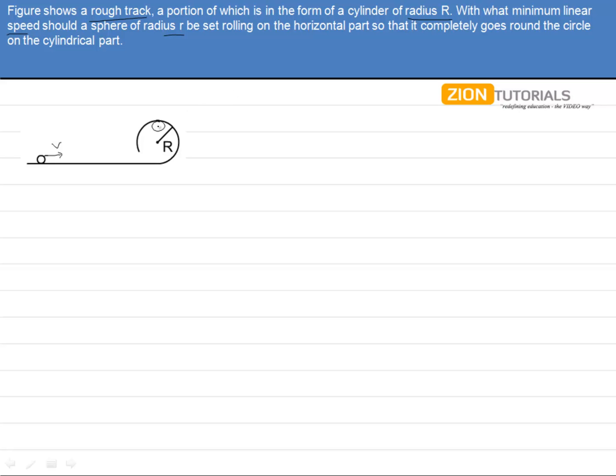Now when this is at the topmost part, if we assume the radius of this small ball to be small r, then I can write down that the centripetal force mv² divided by r. Now what is r from the center? This is capital R minus small r, because we will be taking the center of mass of the ball. So small r equals to mg, which is the total vertical force.